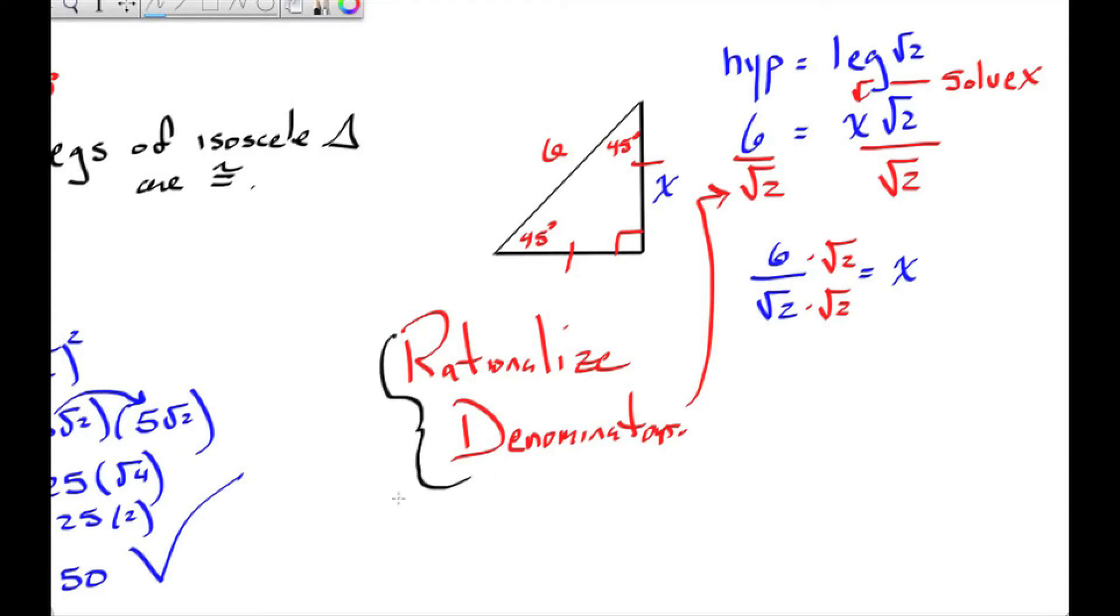This gets rid of the undesirable root in the denominator. So root 2 times root 2 is root 4. Root 4 simplifies to 2. 2 goes into 6 three times, and we have our final answer, 3 root 2.